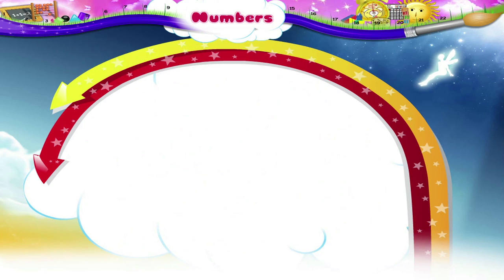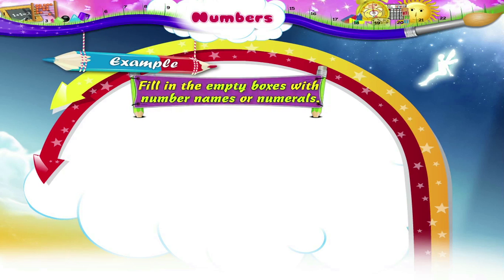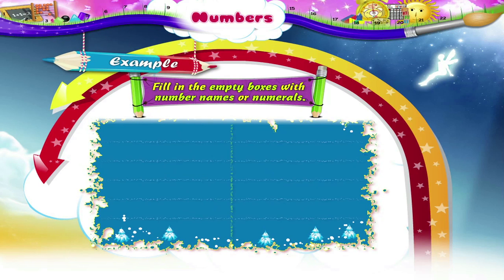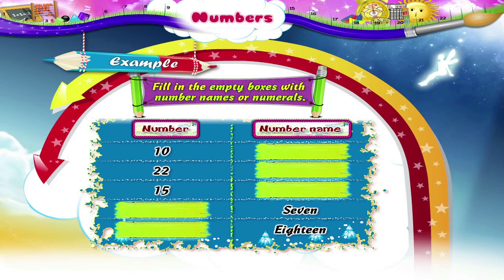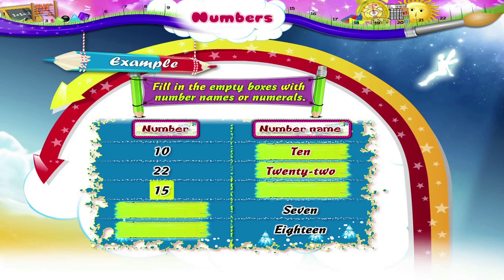Let us solve the next example. We have to fill in the empty boxes with number names or numerals. The number 10 is written in words as T-E-N. Number 22 is written as T-W-E-N-T-Y T-W-O.